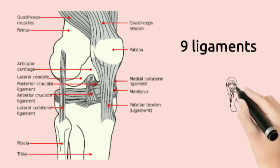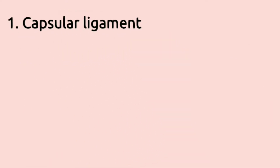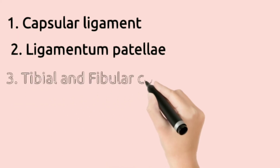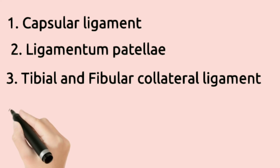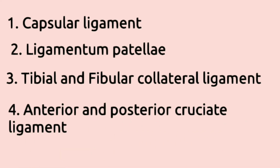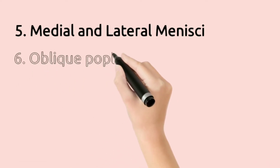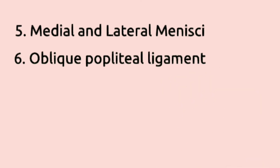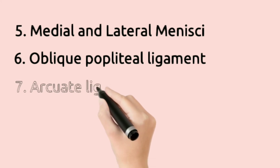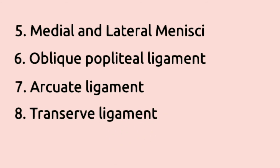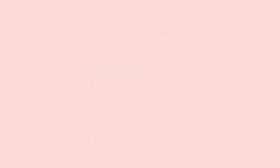Let's see them individually. First, the capsular ligament. Second, the ligamentum patella. Third, the tibial and fibular collateral ligaments. Fourth, the anterior and posterior cruciate ligaments. Fifth, the medial and lateral menisci. Sixth, the oblique popliteal ligament. Seventh, the arcuate popliteal ligament. Eighth, the transverse ligament. And ninth, the coronary ligament.